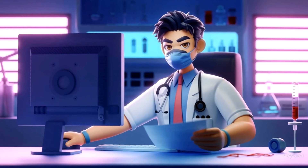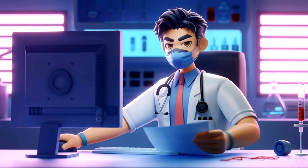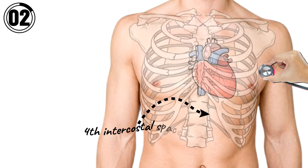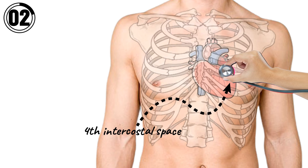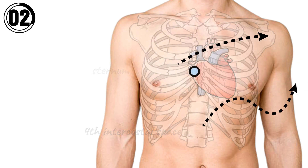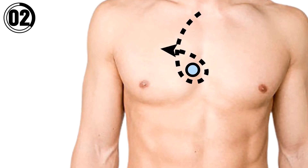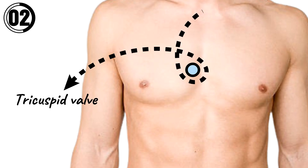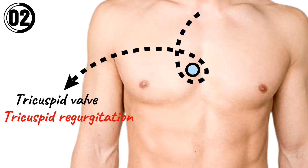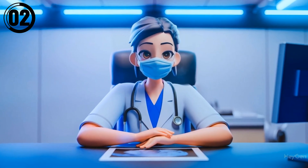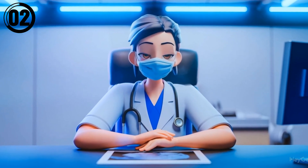Let's move on to the second auscultation point. The stethoscope should be placed at the fourth intercostal space and the left border of the sternum. This auscultation point is best to hear the tricuspid valve and murmurs like tricuspid regurgitation. Now let's hear the tricuspid regurgitation.